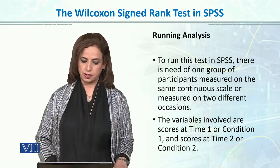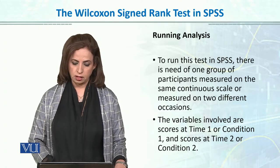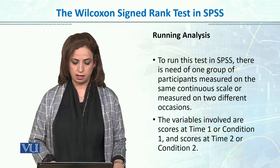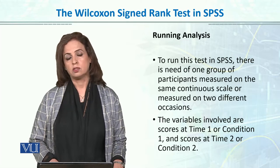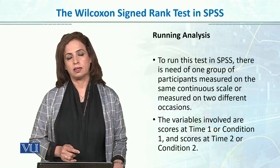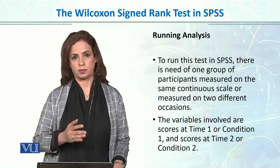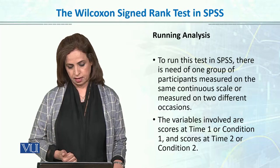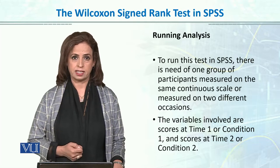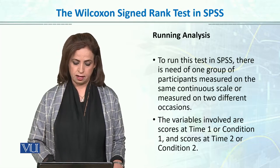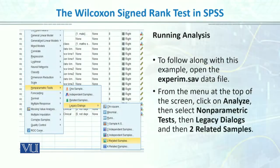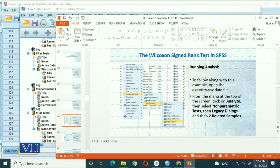To run the test in SPSS, we need one group of participants measured on the same continuous scale on two different occasions. The same participants are assessed at time 1 and then assessed again at time 2. The variables involved are scores at time 1 and scores at time 2. Let's go back and solve this in SPSS and then return to this tutorial.